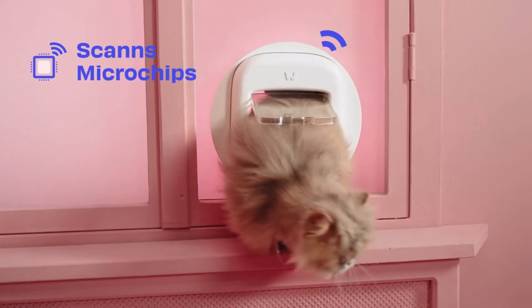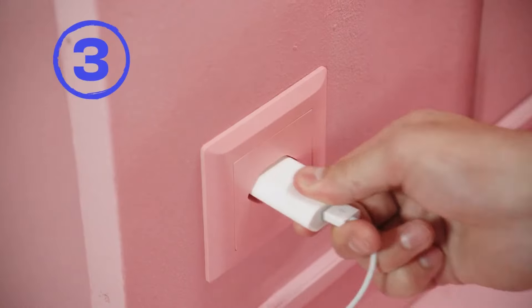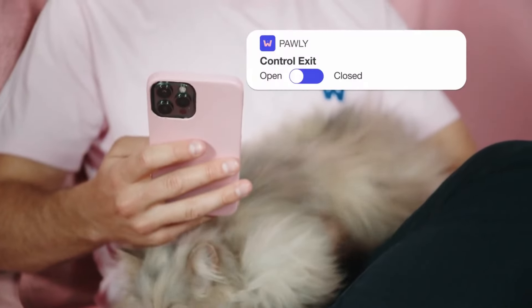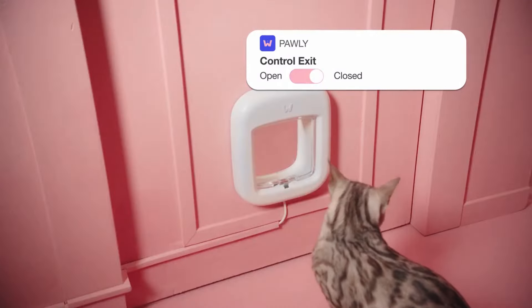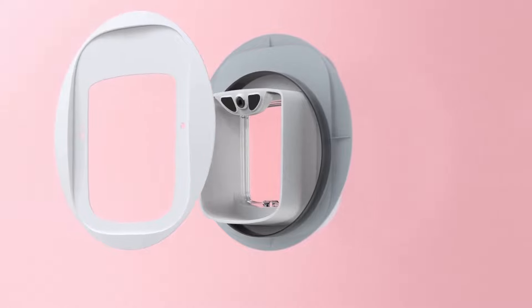The Poly Door employs state-of-the-art sensors and algorithms to detect when your cat returns home with prey, ensuring a safe and controlled environment for both your pet and your household. The Poly Door is equipped with advanced sensors that can identify when your cat returns with prey in its mouth.